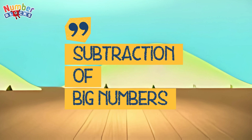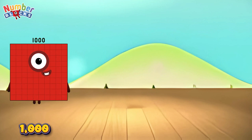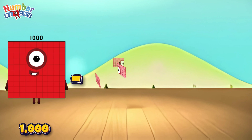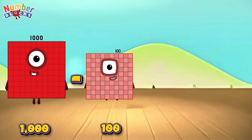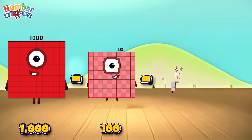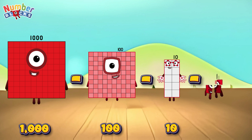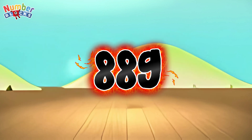Let's learn subtraction of big numbers! One thousand minus one hundred minus ten minus one is equals eight hundred and eighty-nine!